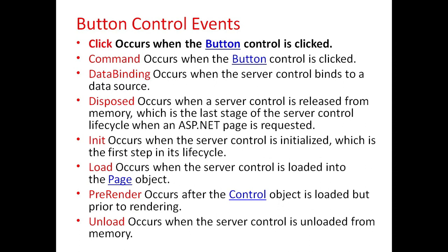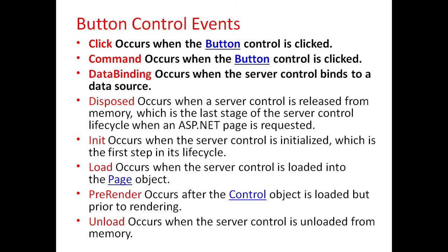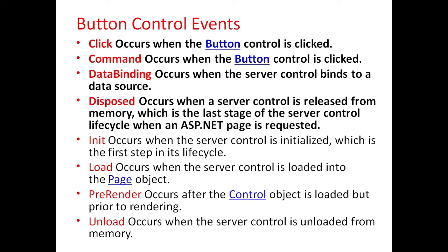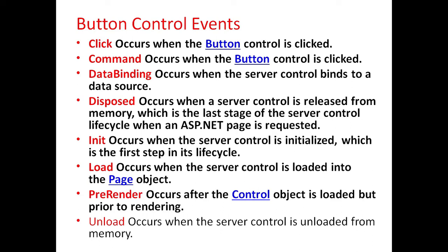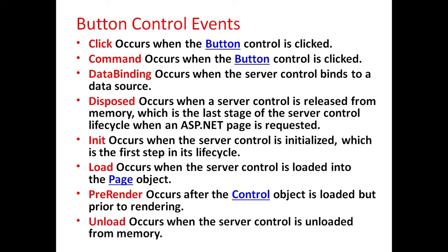Different button control events are: Click, which occurs when the button control is clicked. Command event occurs when the button control is clicked. DataBinding event occurs when the server control binds to a data source. Disposed event occurs when a server control is released from memory, which is the last stage of the server control life cycle. Init event occurs when the server control is initialized, which is the first step in its life cycle. Load event occurs when the server control is loaded into the page object. PreRender occurs after the control object is loaded but prior to rendering. And Unload event occurs when the server control is unloaded from memory.